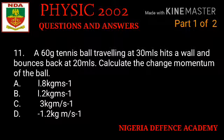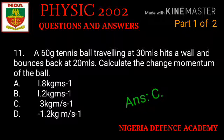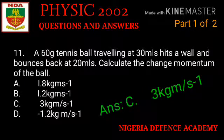Question number eleven: a 60-gram tennis ball traveling at 30 meters per second hits a wall and bounces back at 20 meters per second. Calculate the change in momentum of the ball. Option A: 1.8 kg·m/s. Option B: 1.2 kg·m/s. Option C: 3 kg·m/s. Option D: −1.2 kg·m/s. The right answer is option C — 3 kilogram meters per second.